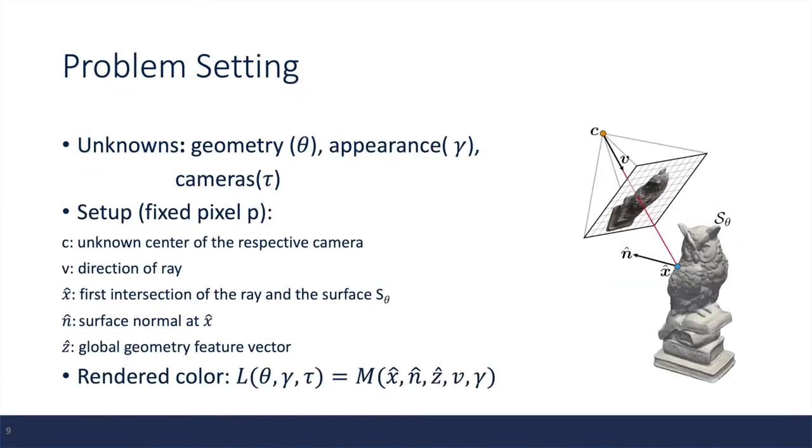So here is a more formal description of the problem. We have three unknowns: the geometry, the appearance, and the camera. In this case, the authors use ray casting as the general rendering framework, which has the following setup.